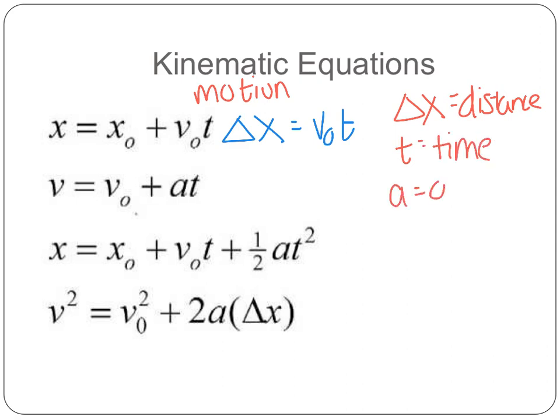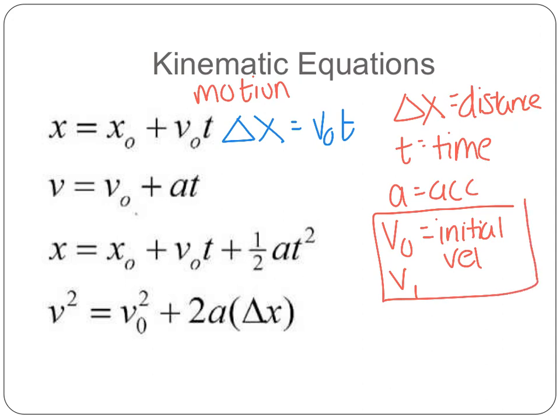V0 is my initial velocity. You may see me also put VI, same exact thing. We also have our final velocity, which we can just call V, or I like to call it VF. So that's our final velocity. Now, let's dive a little deeper exploring these equations.